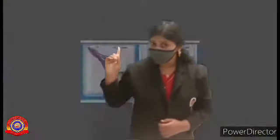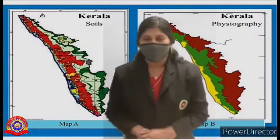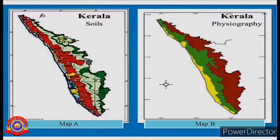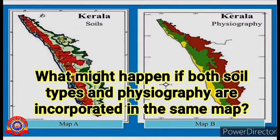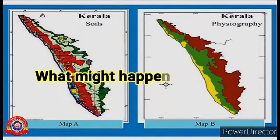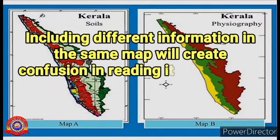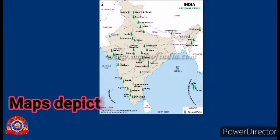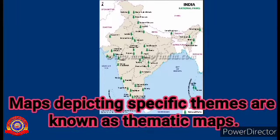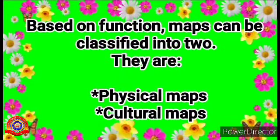We have learned the different uses of maps. Now look at these two maps of Kerala. Compare the given maps of Kerala — are the information included in both the maps the same? Map A depicts the soils of Kerala and Map B the physiography. What might happen if both soil types and physiography are incorporated in the same map? Including different information in the same map will create confusion in reading it. That is why different information are plotted in different maps. Maps depicting specific themes are known as thematic maps.